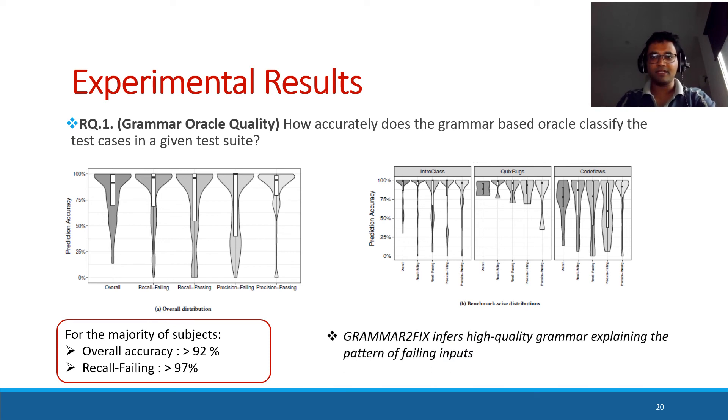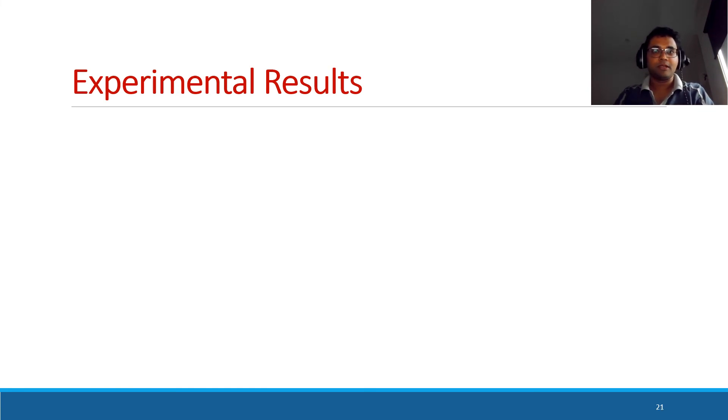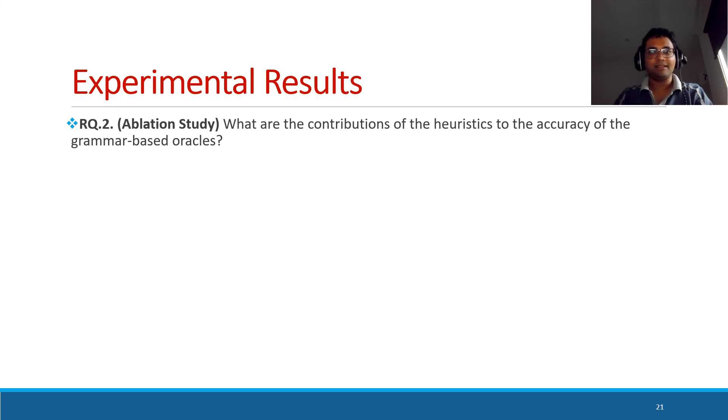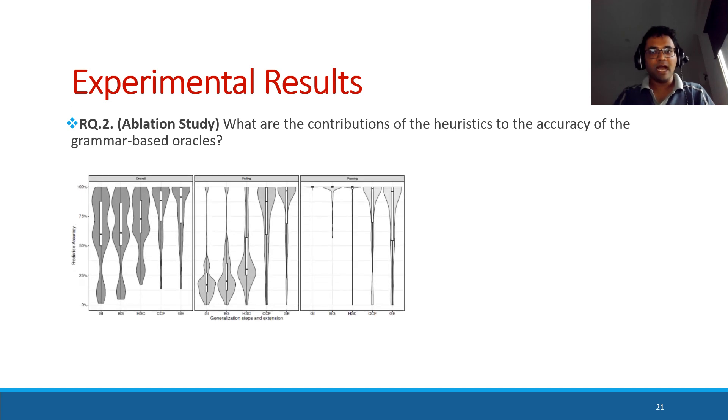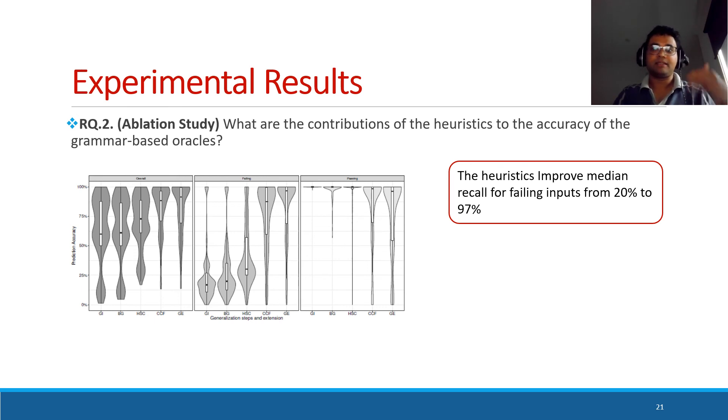It implies that Grammar2Fix infers high quality grammar explaining the pattern of failing inputs. And the next research question, we actually assess the contributions from these heuristics we used in Grammar2Fix, especially in generalization steps. We identified that through these generalization steps, the recall for failing input is improved from 20% to 97%. So we conclude that these heuristics positively affect the grammar quality.